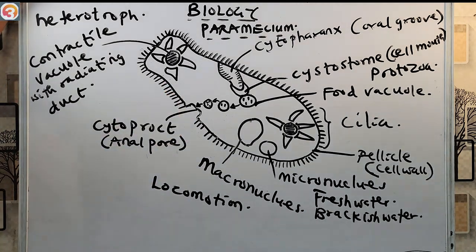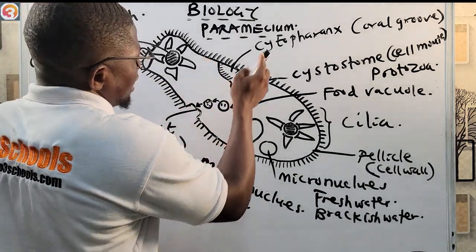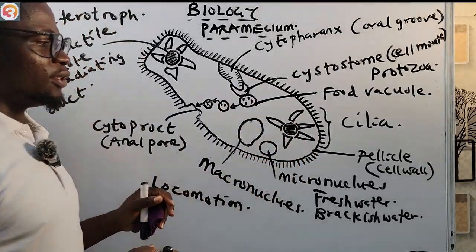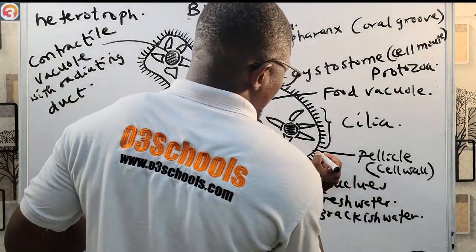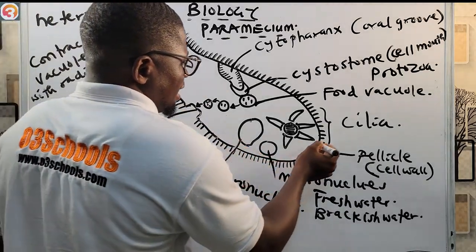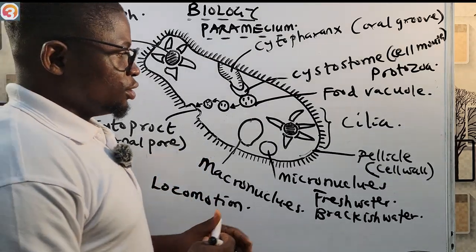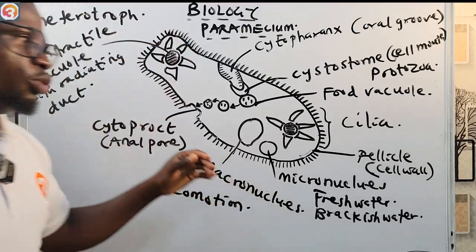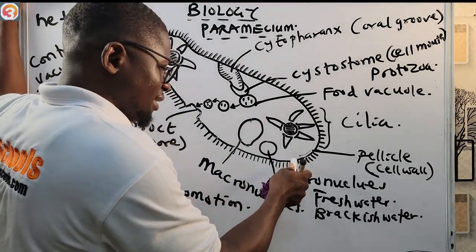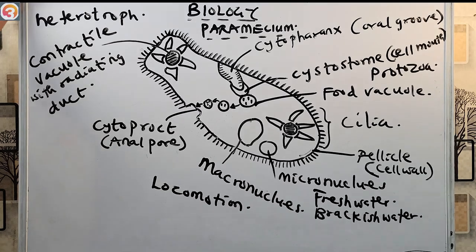The flexible outer covering made up of protein is called the pellicle. It provides protection and support for the cell. So the pellicle — the flexible outer covering of the paramecium made up of protein — functions for support and protection of the organism.